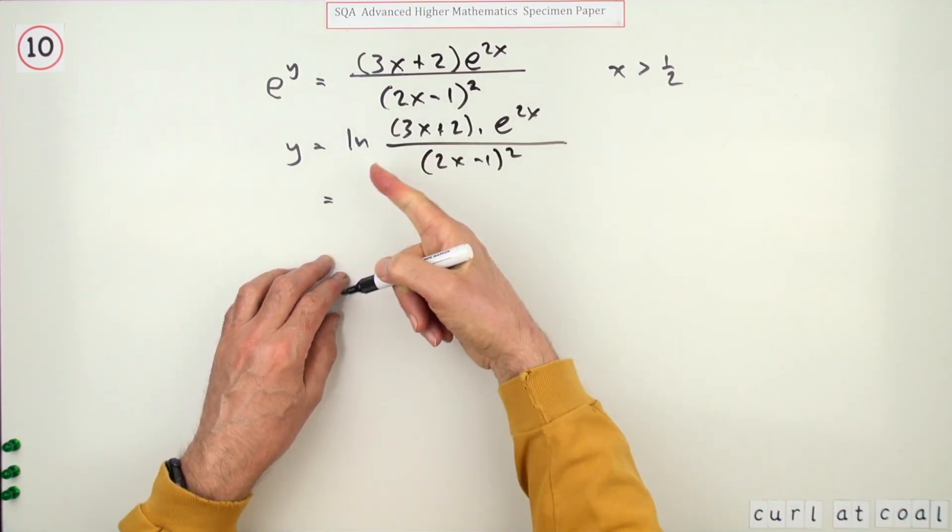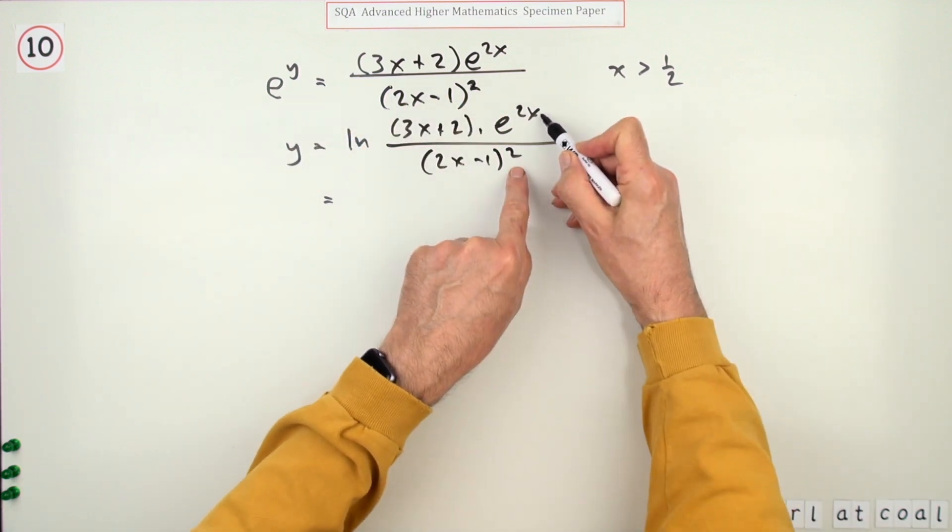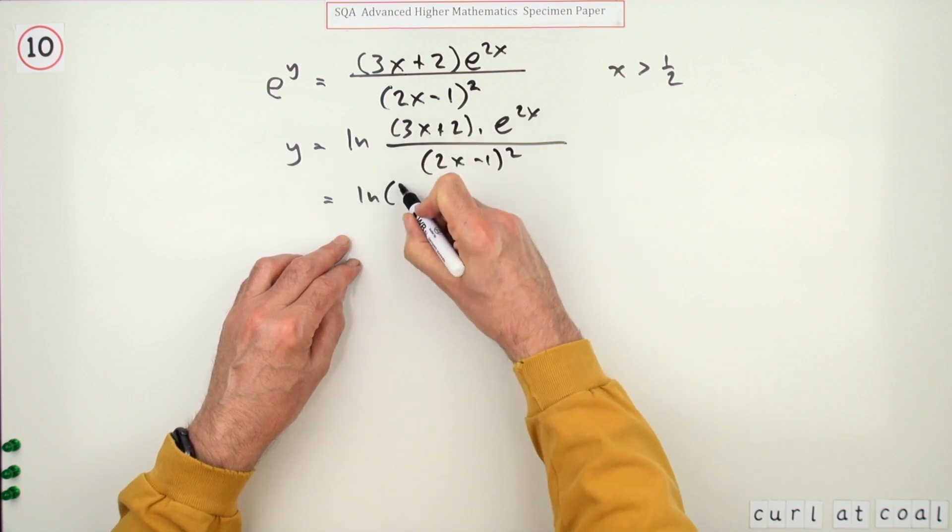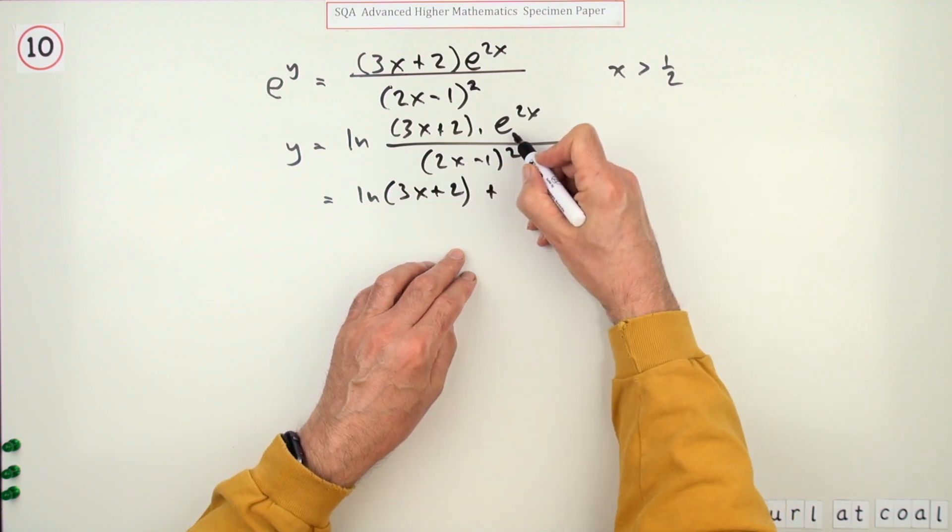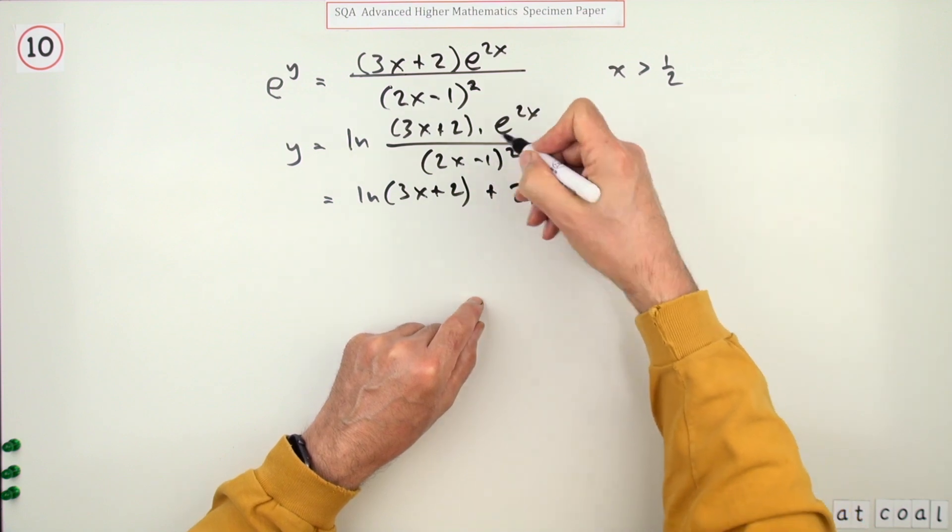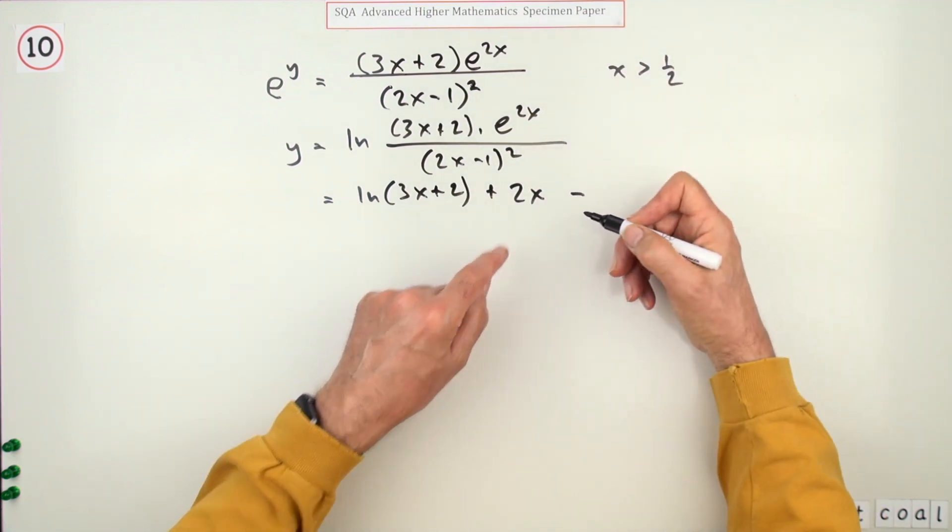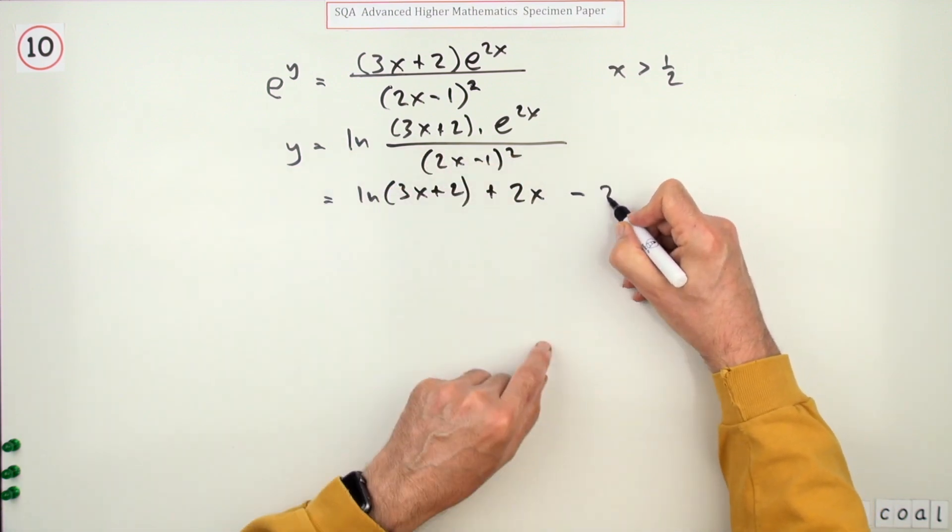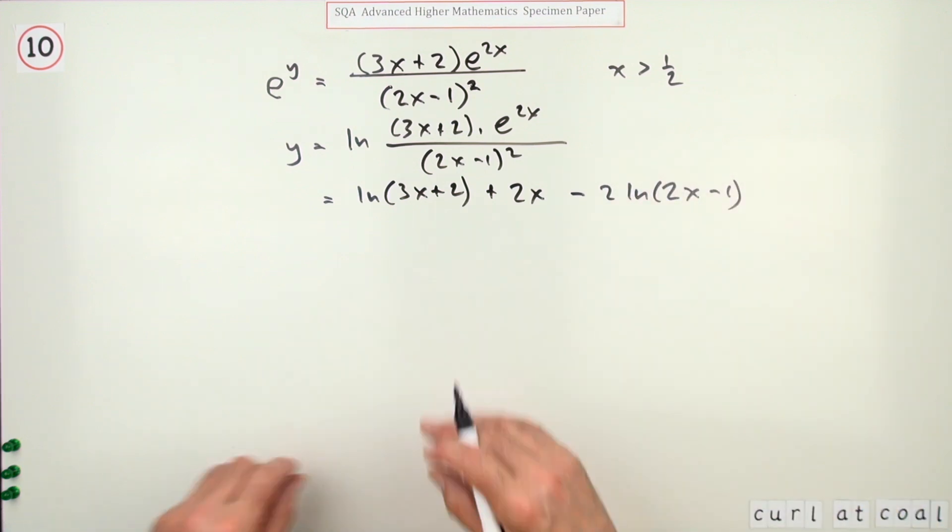So now you can use your logs to split it all apart. There's three bits here and they've also got powers in them that can pop out to the front. So we've got ln of 3x plus 2 plus you've got ln of this. Now ln of e is just going to pop back to 2x. I'm just going to jump straight in with that rather than writing ln of e to the 2x which just means what power of e is e to the 2x? 2x. The denominator will be minus and it's power 2 so I'll put that to the front, 2ln of 2x minus 1. In fact there's two marks there already.